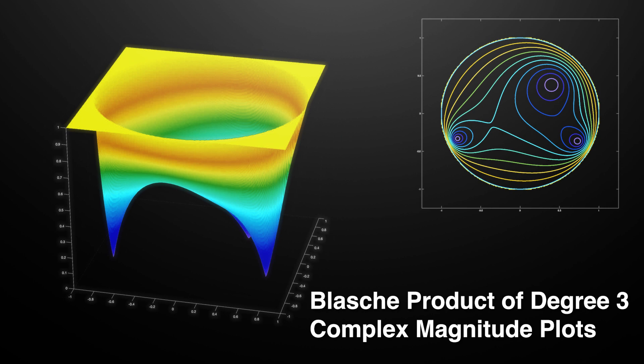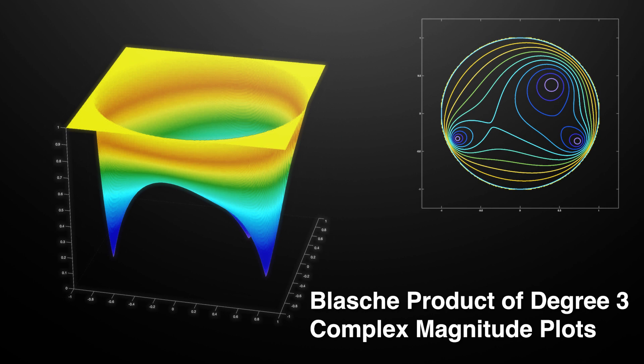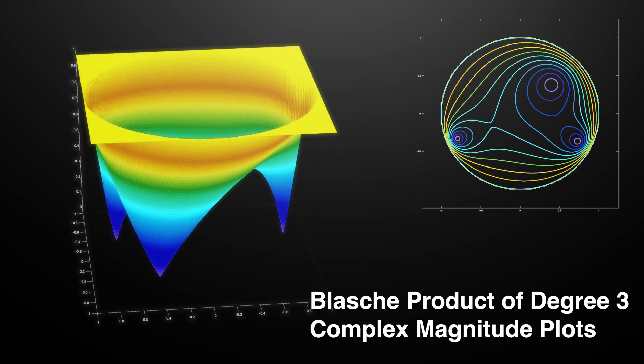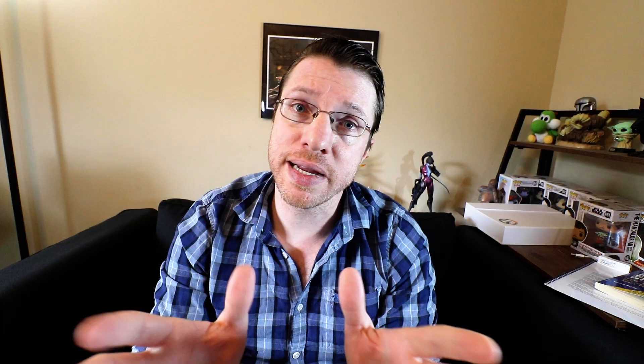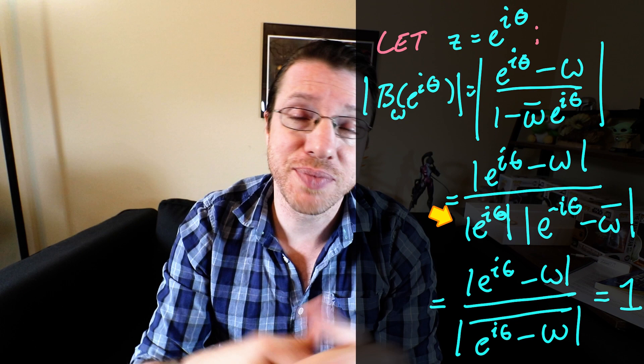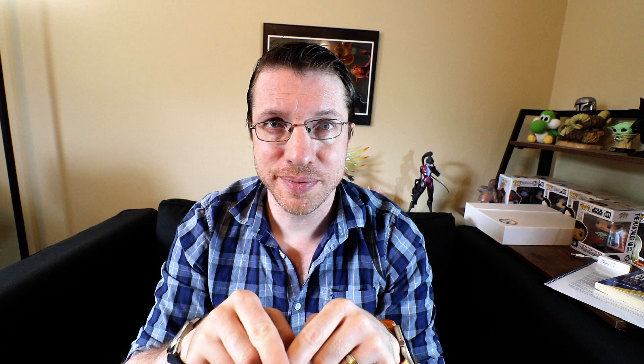A Blaschke function looks like this, and a Blaschke product is a product of Blaschke functions, each one corresponding to a different W. Blaschke functions are Möbius transformations that map the disk back to itself — they are automorphisms of the disk. More than that, on the unit circle they are identically norm 1. This can be seen if we choose a Z on the unit circle, represented as an exponential, and factor that exponential out of the bottom. The numerator and denominator match up in norm, so therefore that is of magnitude 1.